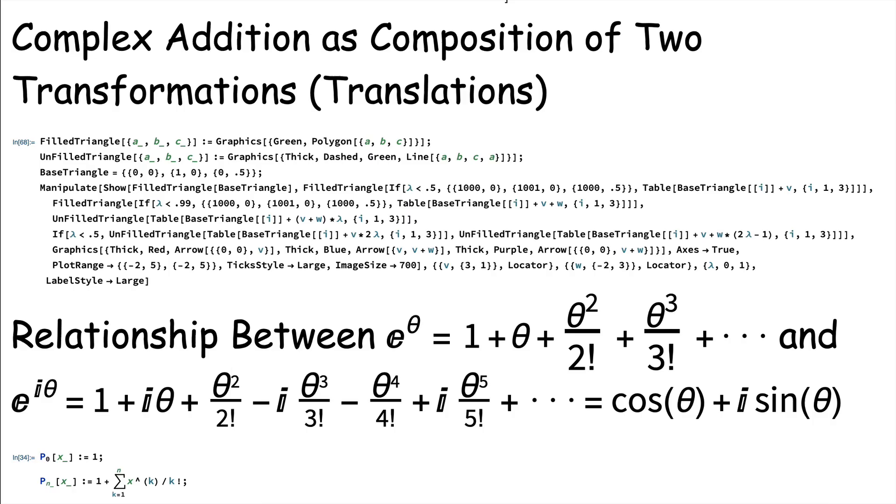Another couple bits of code that I have include first one that helps you see complex addition as composition of two transformations that are translations. If I enter the code, I get this kind of picture.